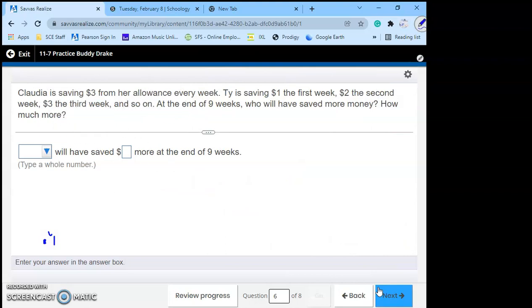Claudia is saving three dollars from her allowance every week. Ty is saving one dollar the first week, two dollars the second week, three dollars the third week and so on. At the end of nine weeks, who will have saved more money and how much more? Alright, well Claudia is $3 a week for nine weeks, so Claudia is going to save three times nine, which is $27.